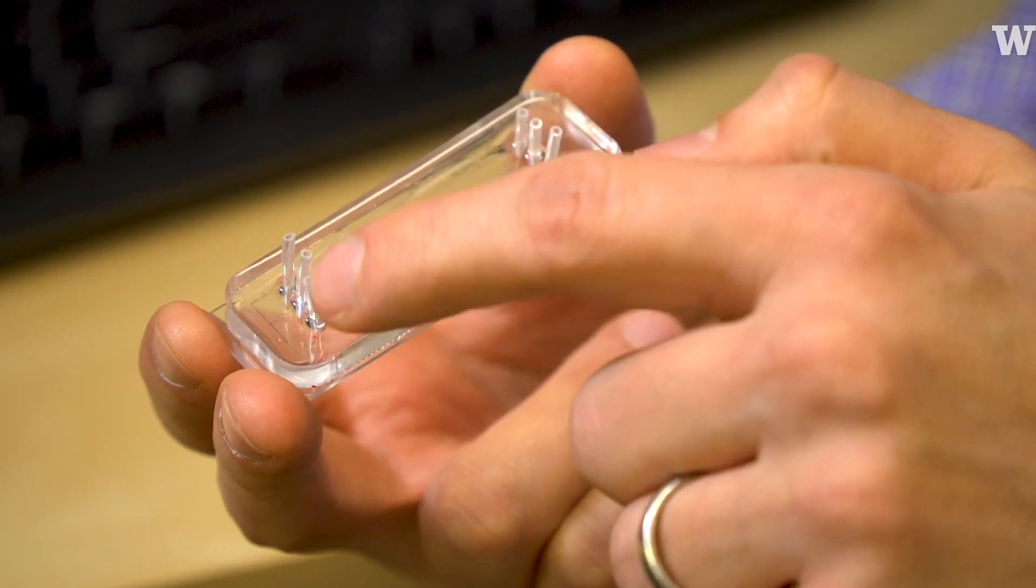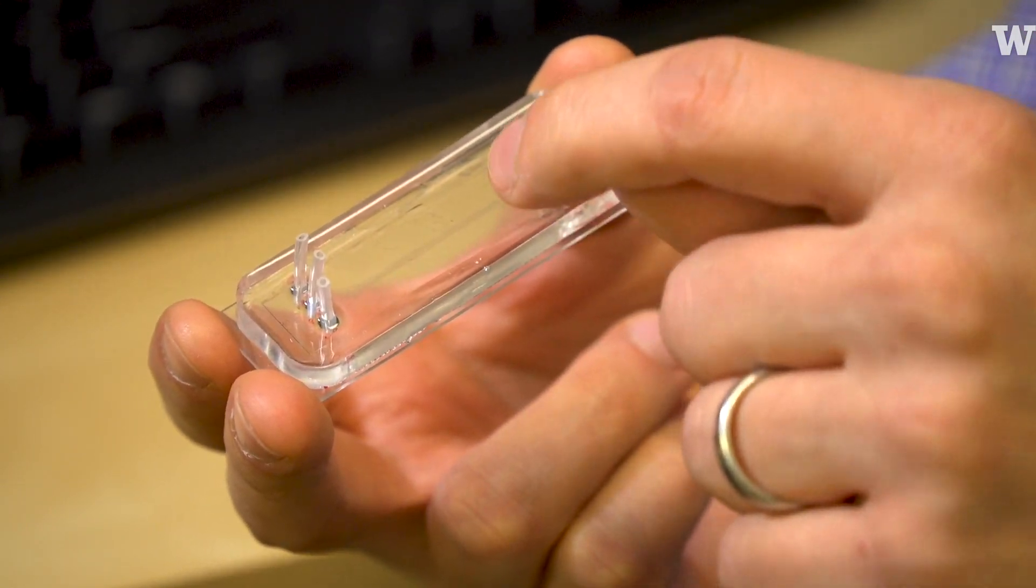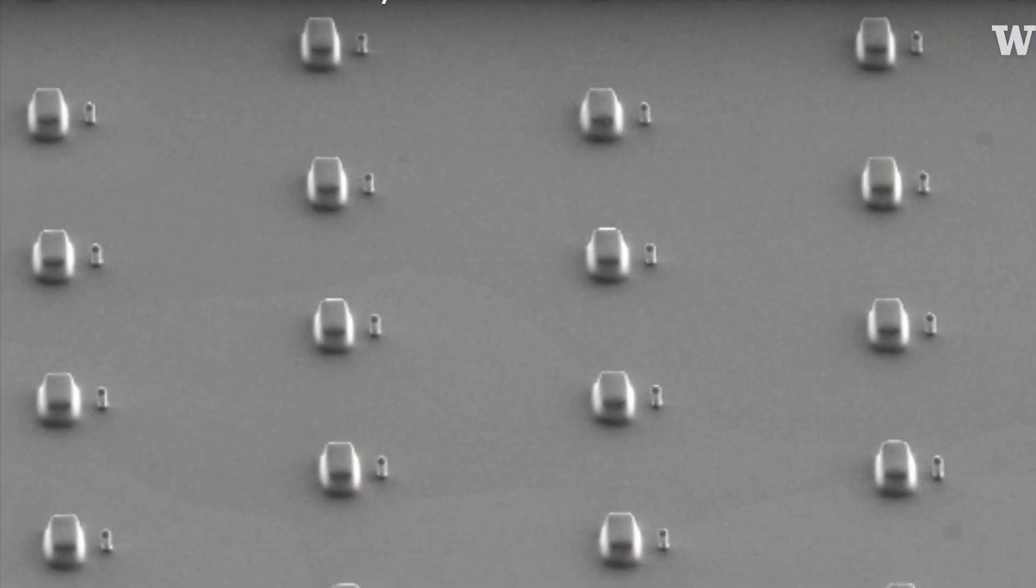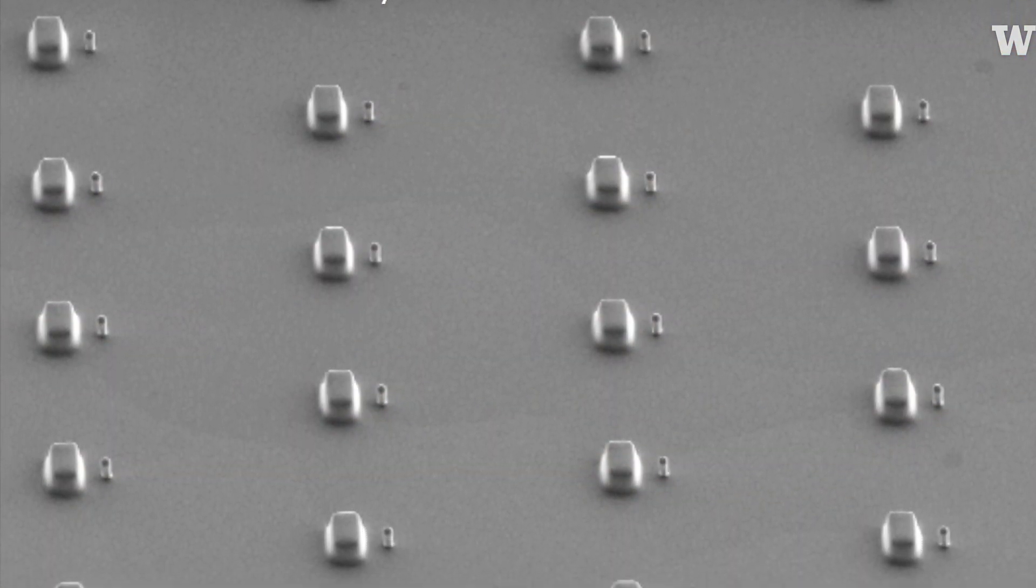This is one of our microfluidic chips where we can flow blood through a channel here that you can barely see. On the bottom of that micro channel we have a rigid block and right behind it we have a flexible post.